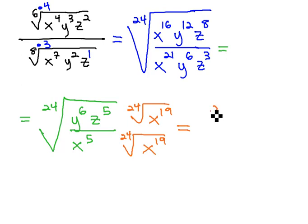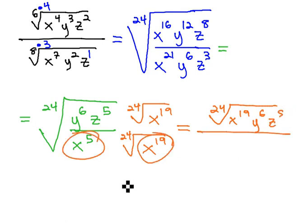And so, in the numerator now, we have the 24th root of x to the 19th, y to the 6th, z to the 5th. With 24 x's under the radical, we can pull the x out, leaving nothing under the radical.